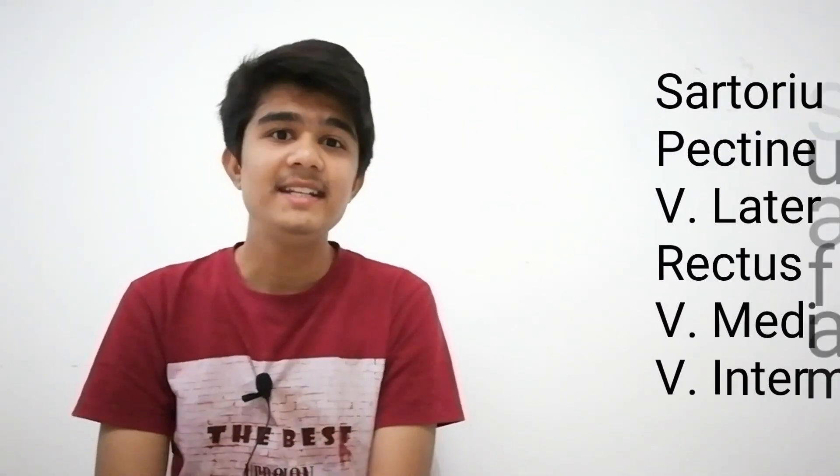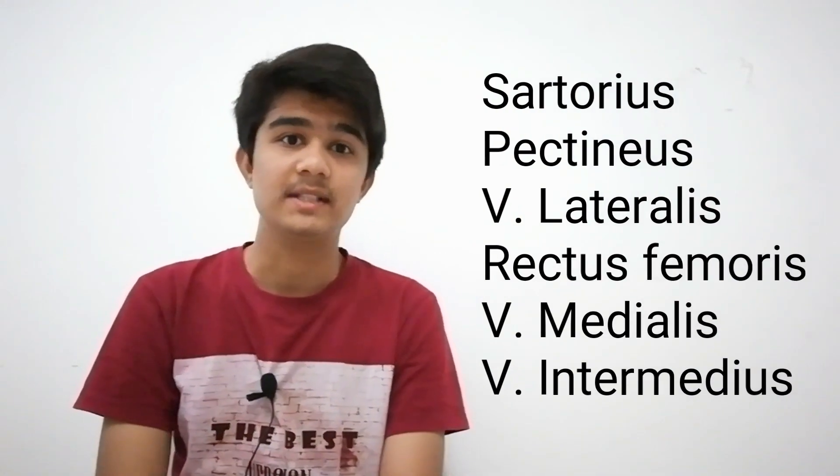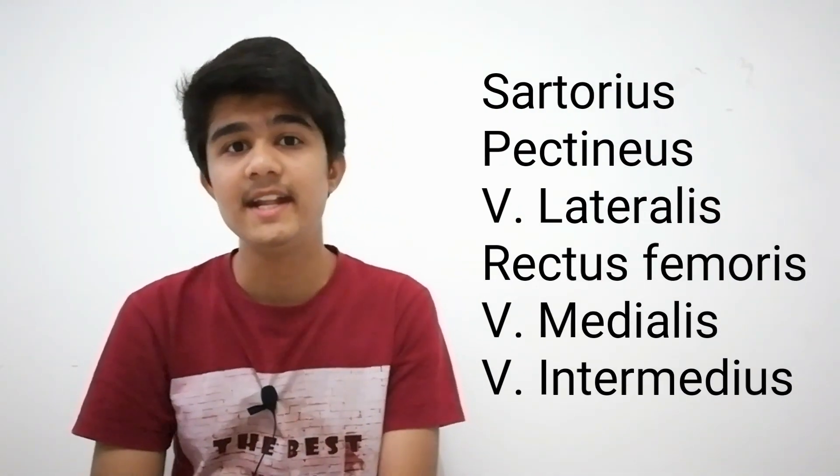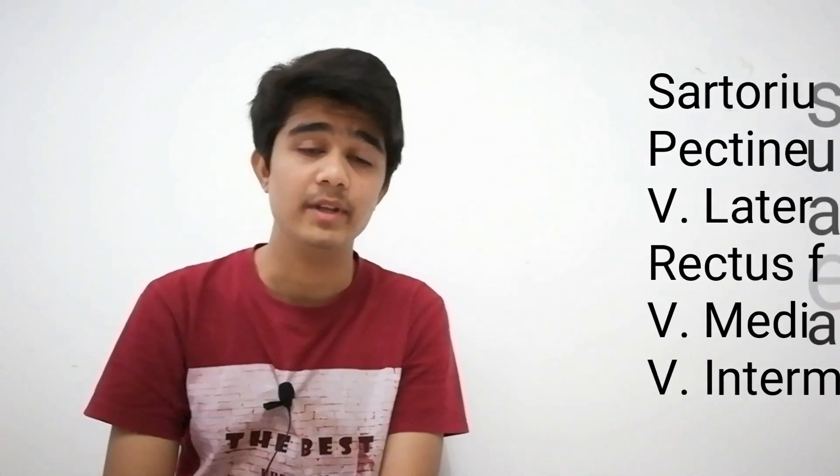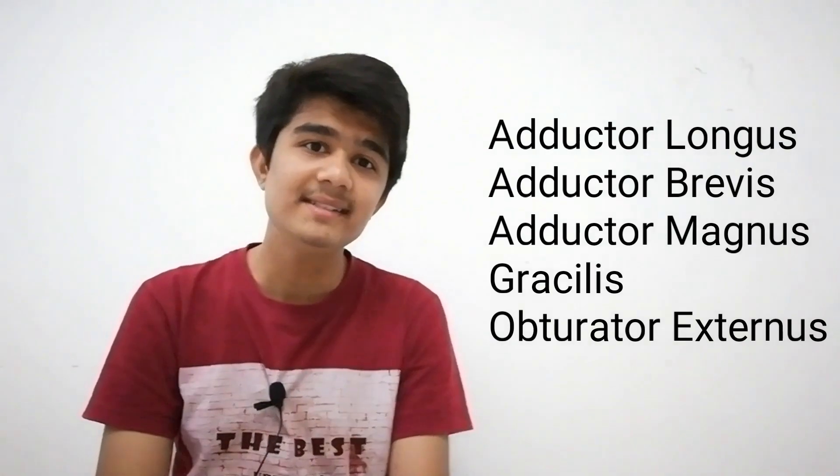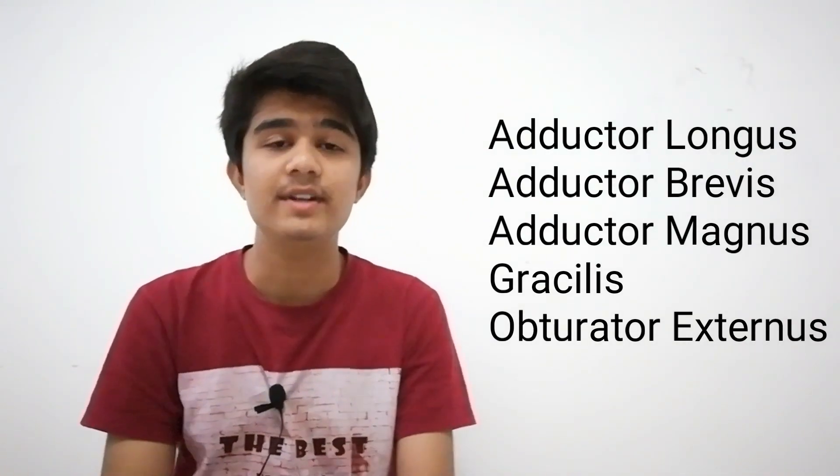In the anterior compartment, the muscle names are: sartorius, pectineus, vastus lateralis, vastus medialis, vastus intermedius, and rectus femoris. In the medial compartment, the muscles are: adductor longus, adductor brevis, adductor magnus, gracilis, and obturator externus. In the posterior compartment, the muscles are semitendinosus and semimembranosus.